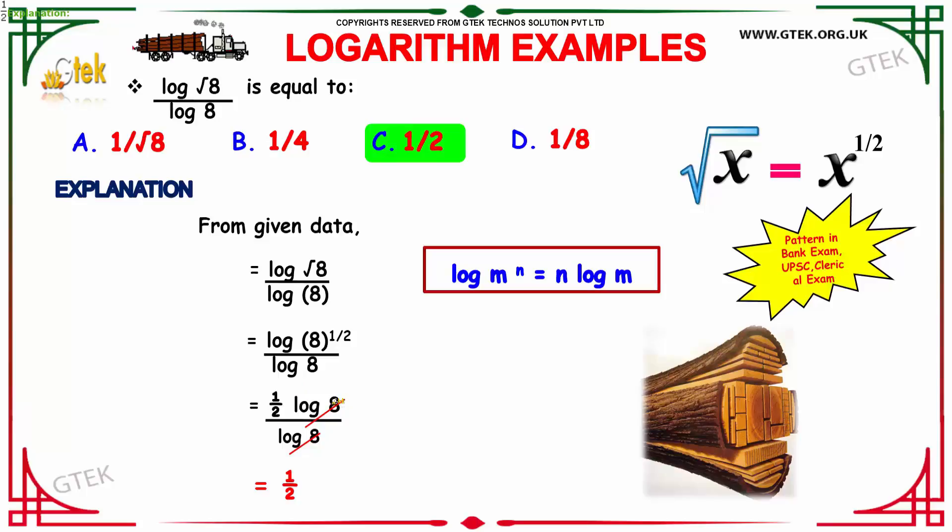Similar terms get cancelled and your answer is 1 by 2. Hence, option C is your answer.